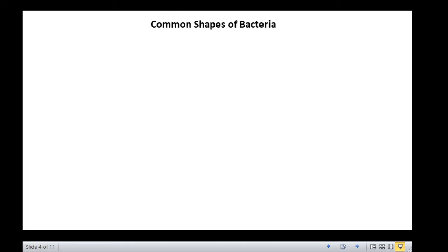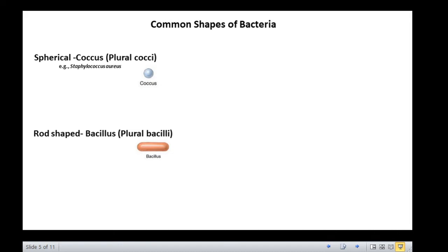For their small size, bacteria exhibit several different shapes. Let us first consider the common shapes of bacteria. The spherical round-shaped bacterium is called a coccus, plural cocci. An example is Staphylococcus aureus. The rod-shaped bacterium is called a bacillus, plural bacilli. Example is Bacillus subtilis.